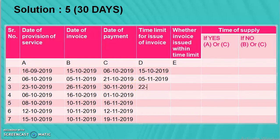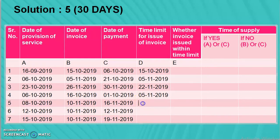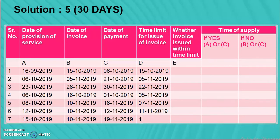Calculating the time limits by adding 30 days to each date of provision of service: the results are 05-11-2019, then 07-11-2019, then 11-11-2019, and the 7th point gives 14-11-2019. These are the deadline dates by which invoices must be issued in each case.